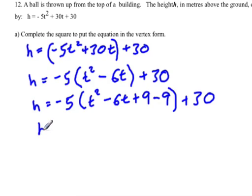So when we take that minus 9 out of the brackets, we have to multiply it by negative 5, because everything in the bracket is multiplied by negative 5. So this will be negative 5 times t squared minus 6t plus 9.